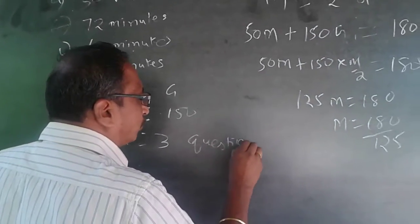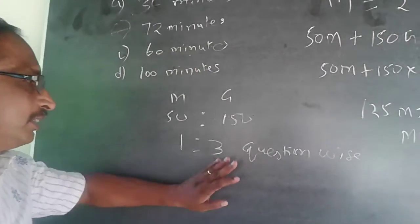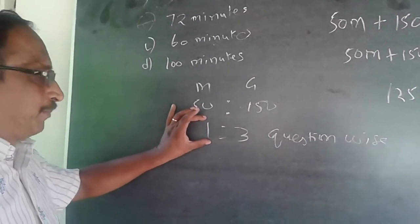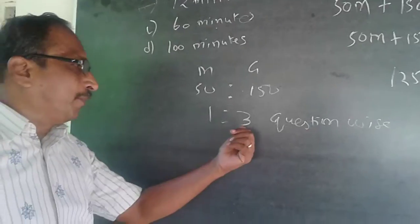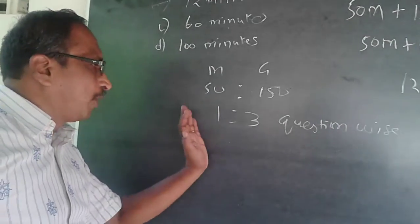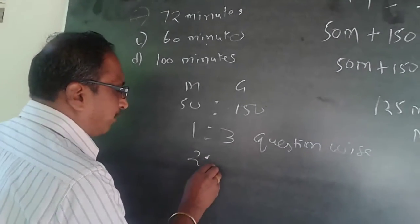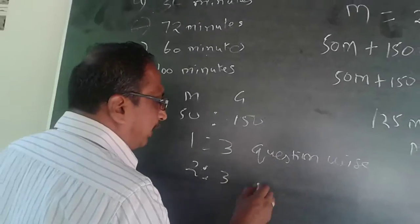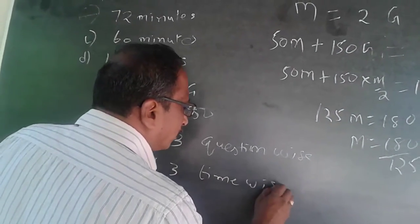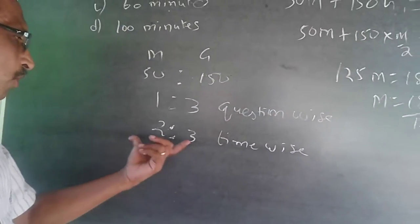Now I have to convert this ratio from question-wise to time-wise. If I presume 1 minute for each general question, I spend 2 minutes for each math question. So the time ratio becomes 2 into 1 versus 3 into 1, meaning the time-wise ratio is 2:3.